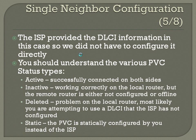We need to understand the various PVC status types. 'Active' means it's successfully connected on both sides — that PVC should be completely working. 'Inactive' means it's working correctly on the local router, but the remote router is either not configured or offline. 'Deleted' means there's a problem on the local router — most likely you're trying to use a DLCI the ISP hasn't configured. 'Static' means the PVC was statically configured by you instead of the ISP.